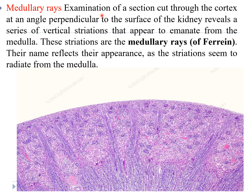Medullary rays are seen when a section is cut through the cortex perpendicular to the surface of the kidney, revealing a series of vertical striations that appear to emanate from the medulla. These striations are the medullary rays of Ferrein. In an H&E-stained section, a number of medullary rays are visible, starting from the medulla and present in the substance of the cortex. These medullary rays consist of aggregations of straight tubules and collecting ducts.